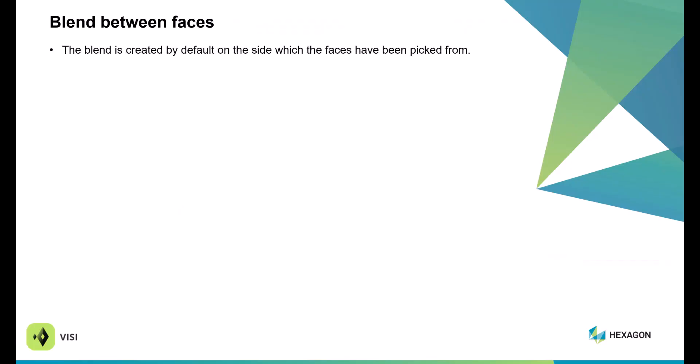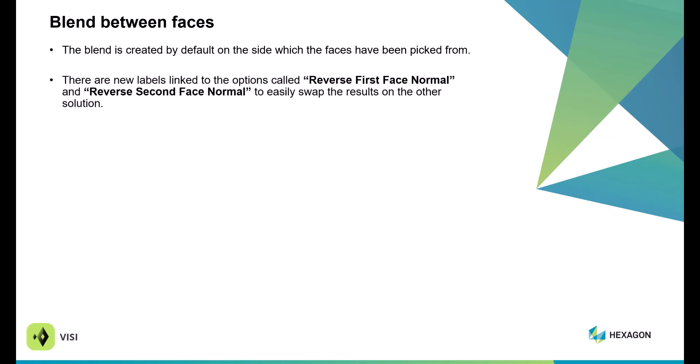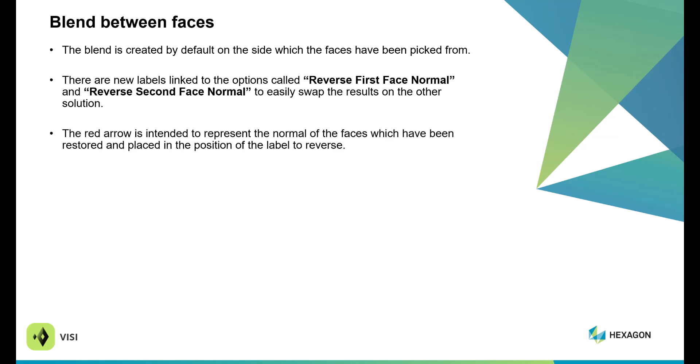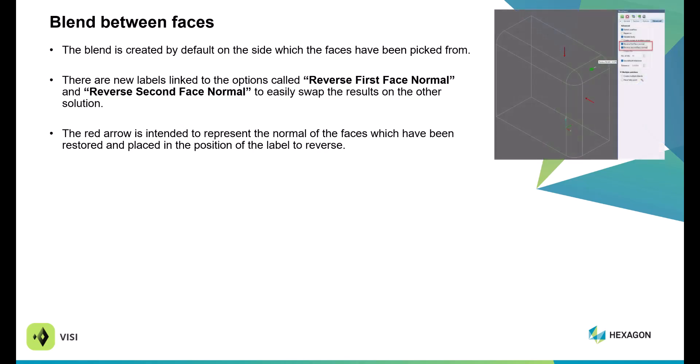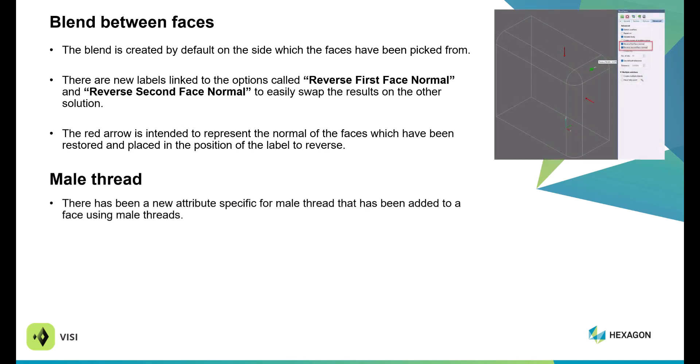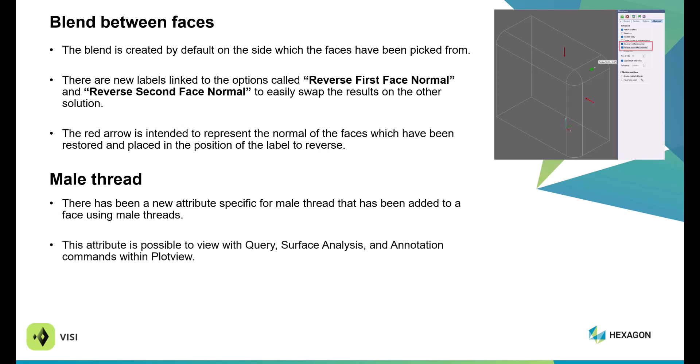Blend between faces: the blend is created from the default side the face has been picked from. There's a quick toggle option to reverse both the first face and the second face within the interface — no longer do you have to go to the advanced tab to check and uncheck those boxes. A red arrow indicates the normal face direction. Within male thread, new attributes have been added to faces used for male threads, and the attribute is applied to query, surface analyzer, annotation, and commands within plot view.